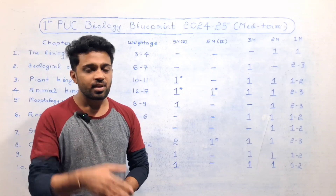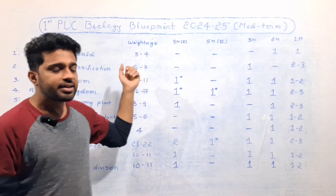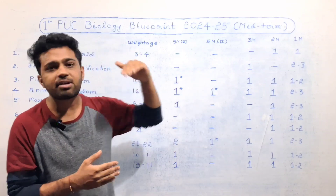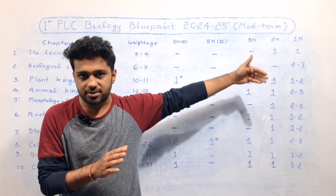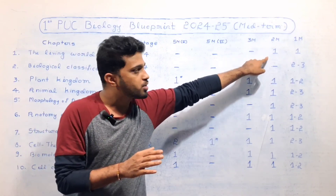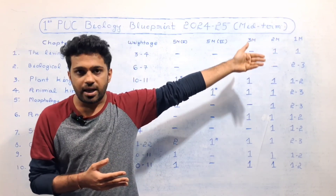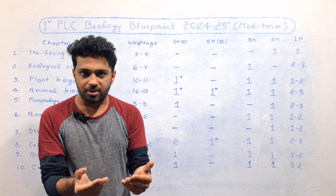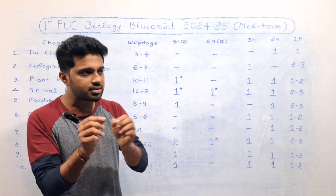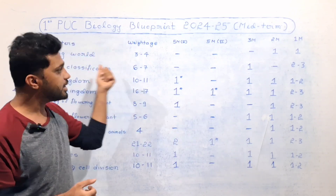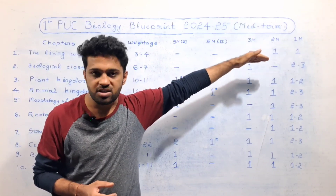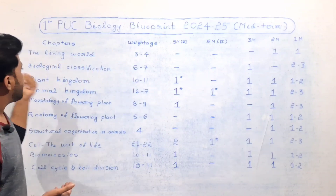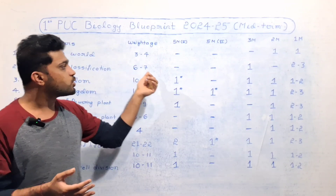The first chapter is the Living World, so there are 3 to 4 marks allowed. Short answer related questions, 2-mark questions, 1-mark questions, MCQ or Fill in the Blank. So short answer related questions — you have a lot of score from this chapter.